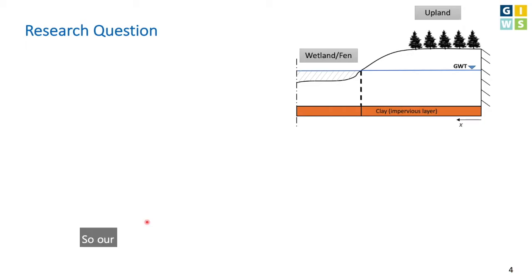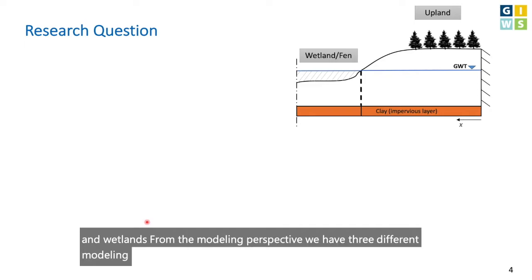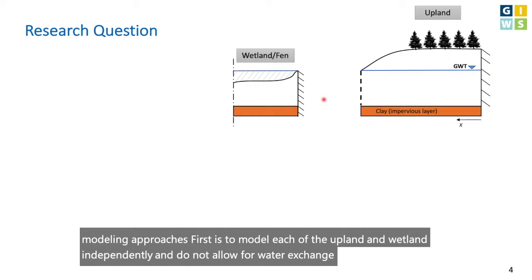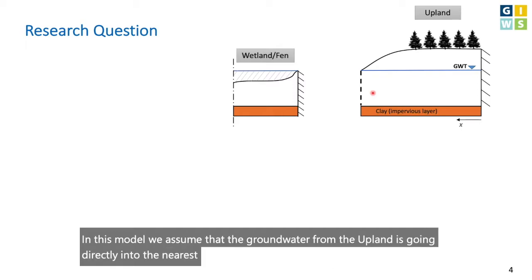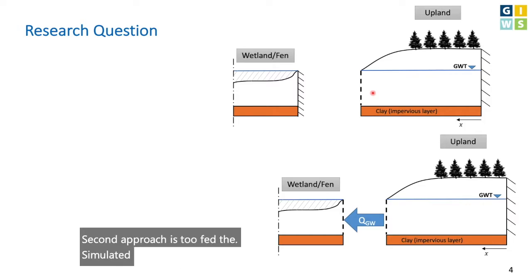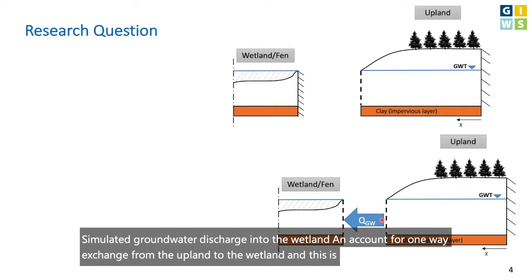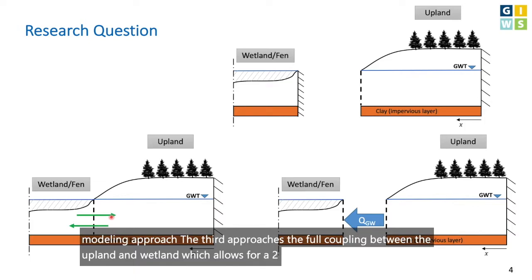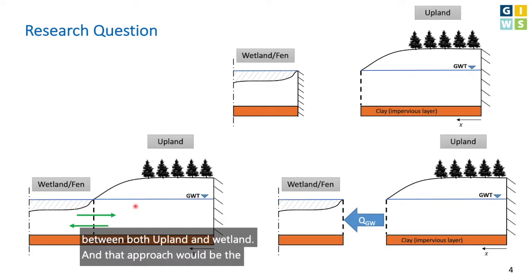Our main objective is to represent the interactions between uplands and wetlands. From the modeling perspective, we have three different approaches. First is to model each of the upland and wetland independently with no water exchange between them — the uncoupled modeling approach. Second is to feed the simulated groundwater discharge into the wetland, accounting for one-way exchange from upland to wetland — the chained modeling approach. The third is the full coupling between upland and wetland, allowing two-way interaction. That approach would be the most accurate but also the most complicated.